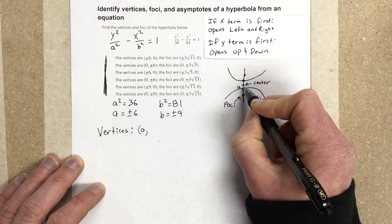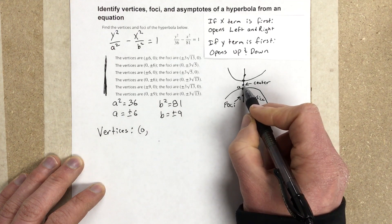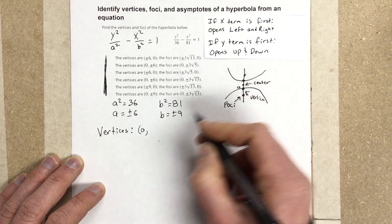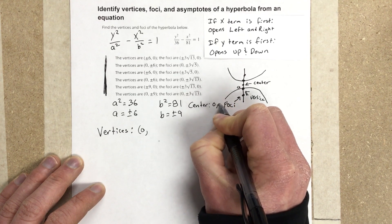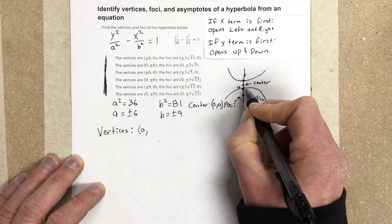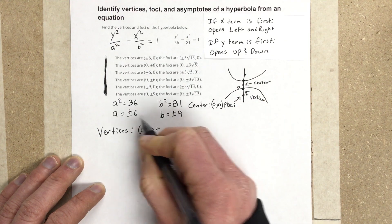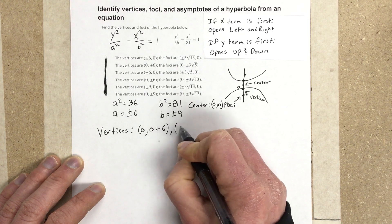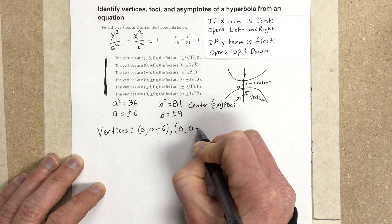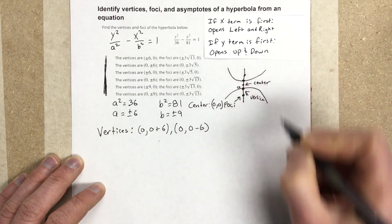But then our y value is going to be this center value, which would be 0. I should have wrote this out here. Center is 0, 0 here. We're going to add 0 with our a value, which is 6, and then we're going to do the same thing, 0 minus 6 for the other piece. So we've got an addition of 6 and a subtraction of 6 to get the vertices.